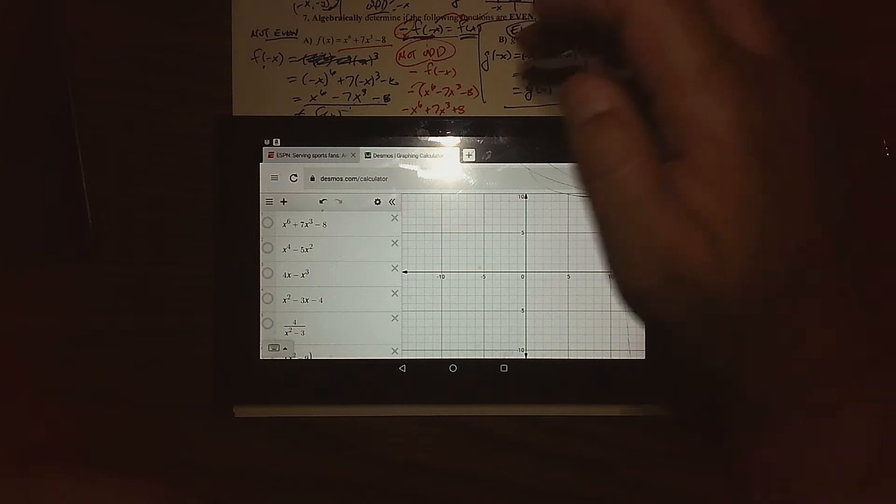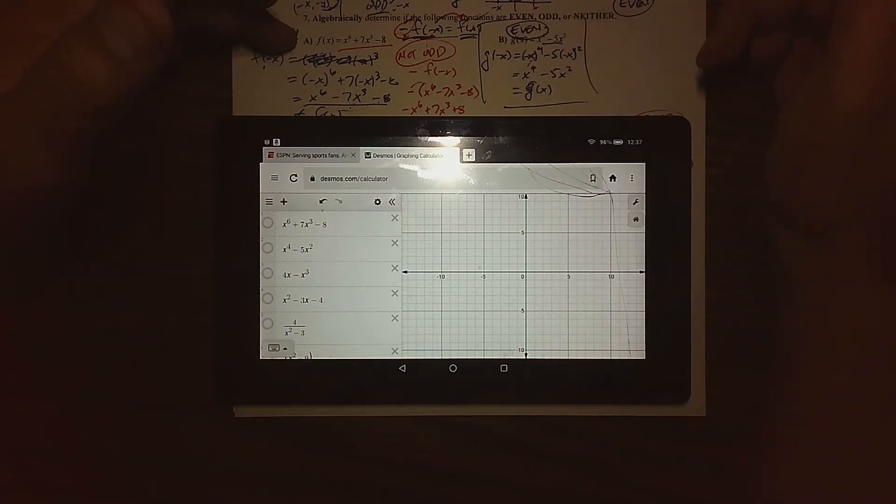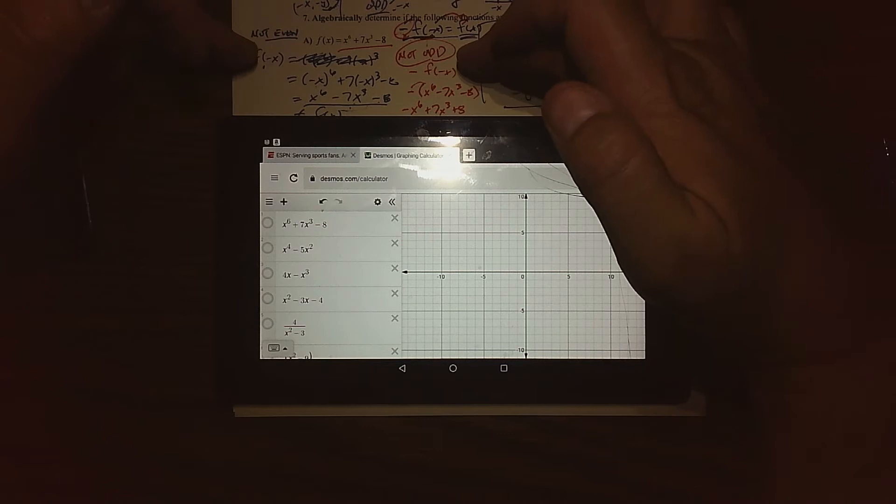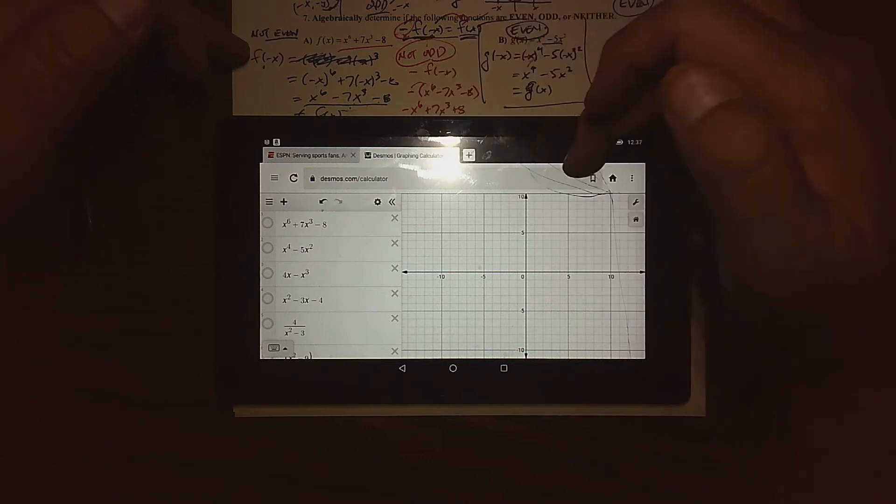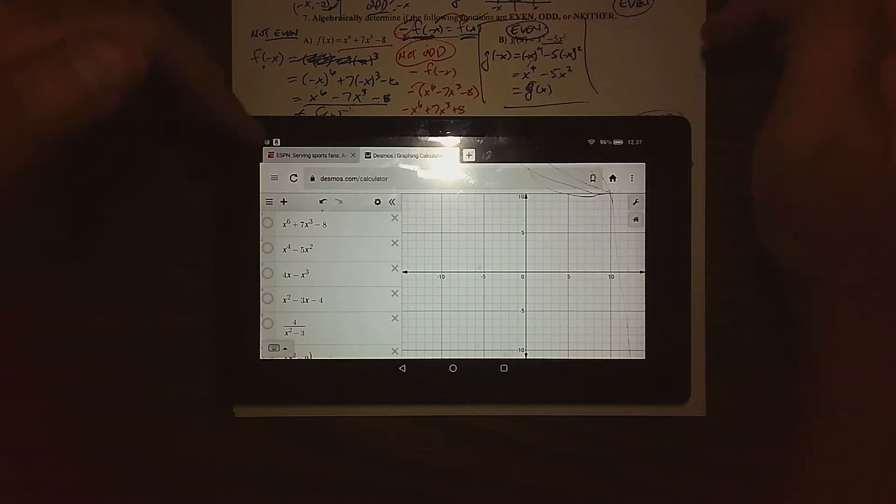In the first one, x^6 + 7x^3 - 8, our algebraic test showed it's neither even nor odd - it's neither symmetric about the origin or the y-axis.